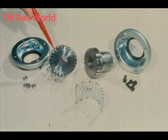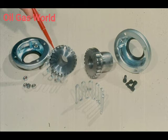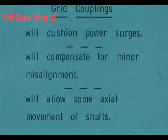This is a grid coupling. It does require lubrication since, as with the gear coupling, there is metal-to-metal contact between the grid and the slots in the hubs. However, the spring steel of the grid adds a number of advantages. A big advantage is that the grid coupling smooths out sudden or abrupt power surges through the spring action of the steel grid. The grid also allows the coupling to compensate for minor misalignment and for some axial movement of the shaft. All in all, the grid coupling is very useful in a wide variety of applications.